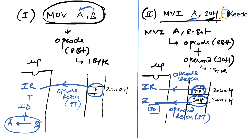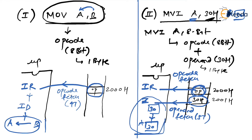Now execution begins. MVI A,30H means move immediately 30H to accumulator. The content of Z is dropped into the accumulator — this is a purely internal operation, not involving external memory read or write. Therefore step 3 can be skipped with no extra machine cycle. Conclusion: MVI A,30H has two machine cycles — opcode fetch (4 T-states) and operand fetch (3 T-states) — requiring 7 T-states total.